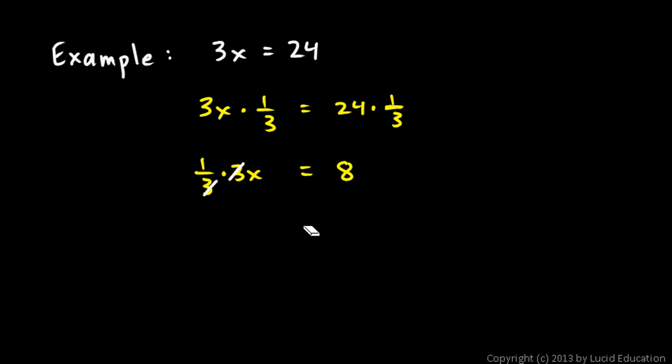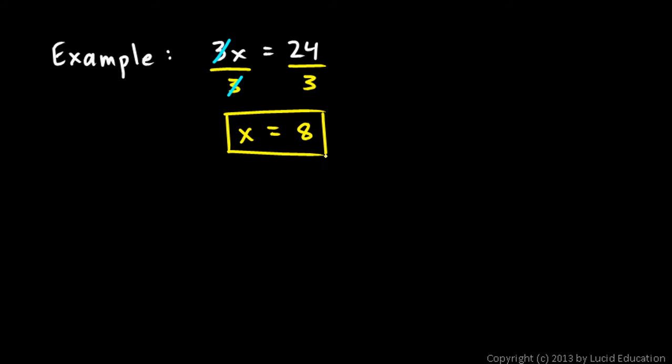Now let me show you an easier way, I think an easier and quicker way to think about this. Rather than multiplying by a third, I like to think of this as a problem we solve by dividing. So this is 3 times x. I can divide the left side by 3 and divide the right side by 3. Multiplying by a third is the same thing as dividing by 3. The key idea is that I do the same thing on each side. Whatever you do to the left, you also do to the right. And I divided by 3 to cancel out that 3, leaving me just with the x all by itself. And on the right, 24 divided by 3 is 8. I think that is a quicker and easier approach.